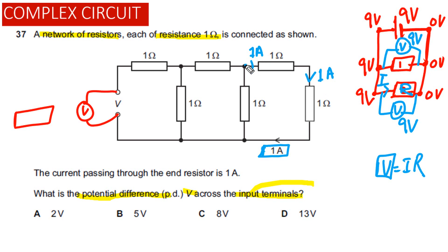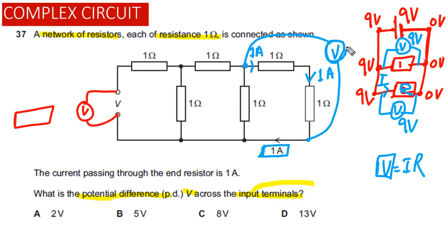If we attach a voltmeter across two resistors in series, the potential difference across each one is equal to 1 volt, so the reading on the voltmeter placed across both will be equal to 2 volts.